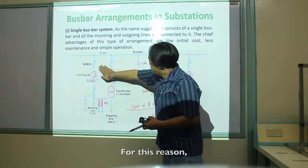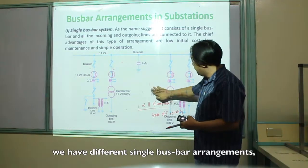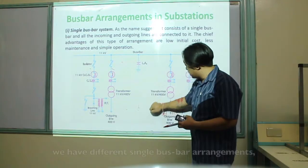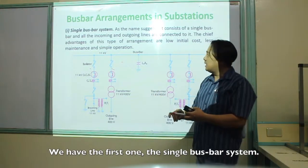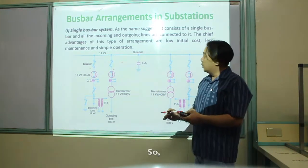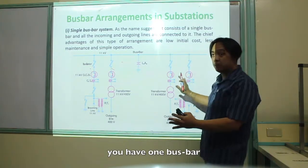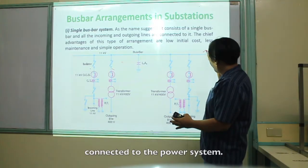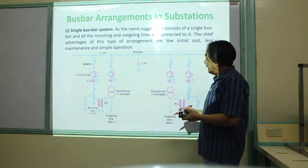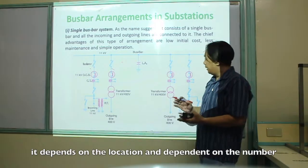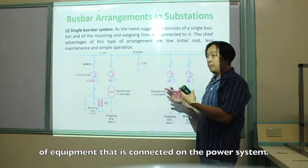For this reason, we have different single bus bar arrangements. The first is the single bus bar system. A single bus bar system has one bus bar connected in the power system. It depends on the location and the number of equipment connected. Your bus bar is only one and you have your various components.